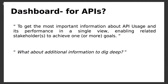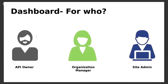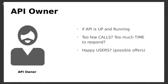I was designing a dashboard for API management and thought about the possible stakeholders: an API owner, an organization manager, and a site admin. For API owners, they want to know if their API is up and running based on dashboard information, or even a simple thing like if your API is slow or down — because their API might be used by lots of consumers, with apps running on it and revenue being generated from it.